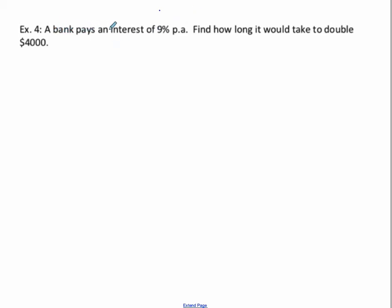So this problem, a bank pays interest of 9% per year. We're going to assume this is compound interest. How long will it take to double? So if it doubles, 4000, that's going to be 8000.